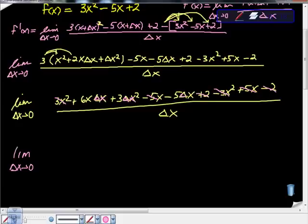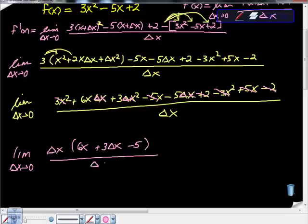There's a change of x here. So from all of those, I'm going to go ahead and factor out one change of x and get 6x plus 3 changes of x minus 5 all over change of x.